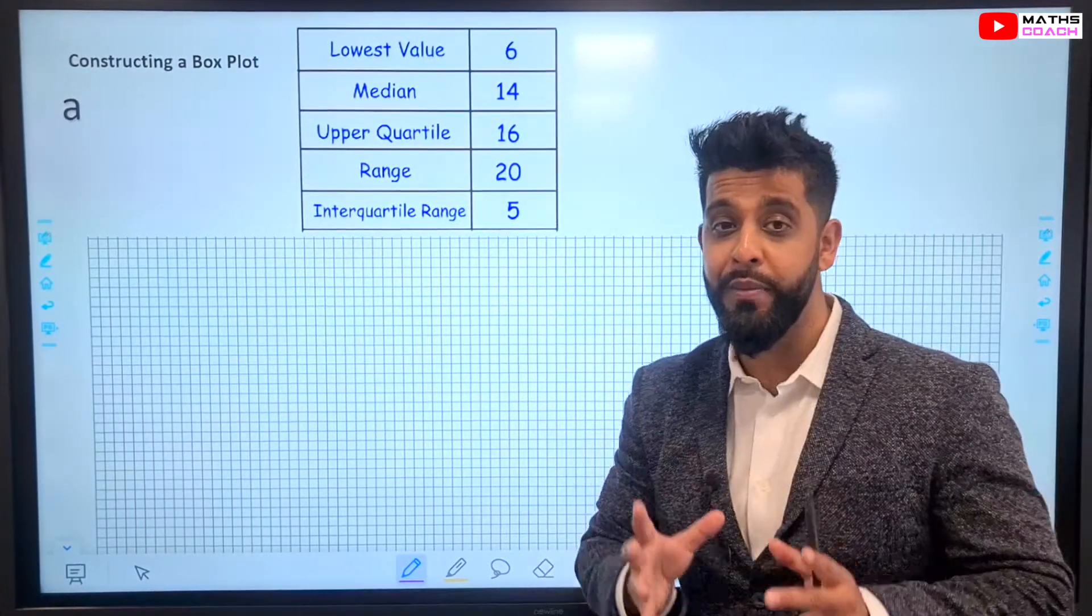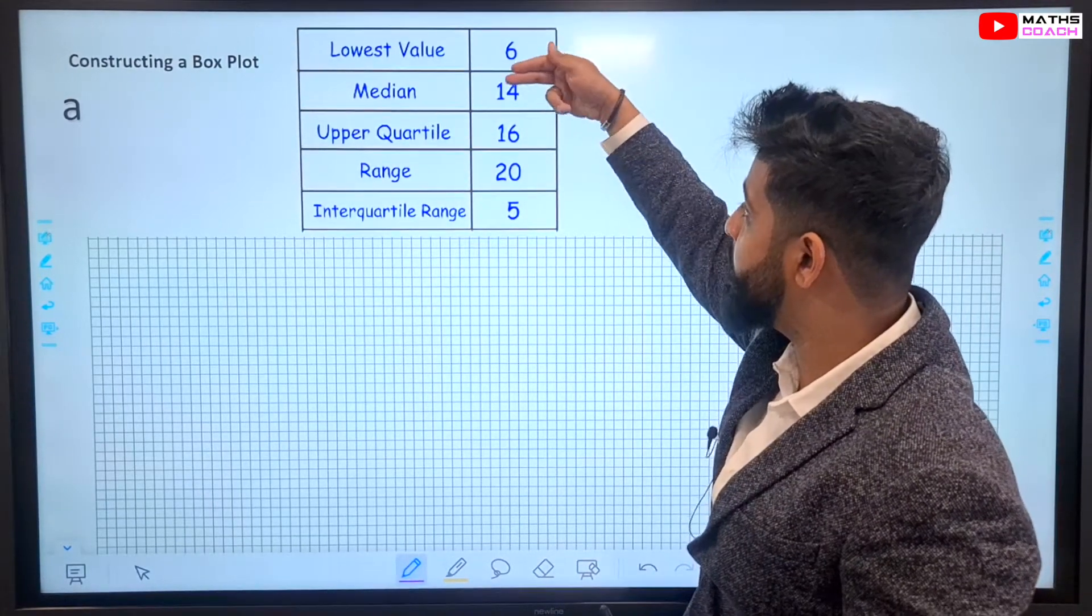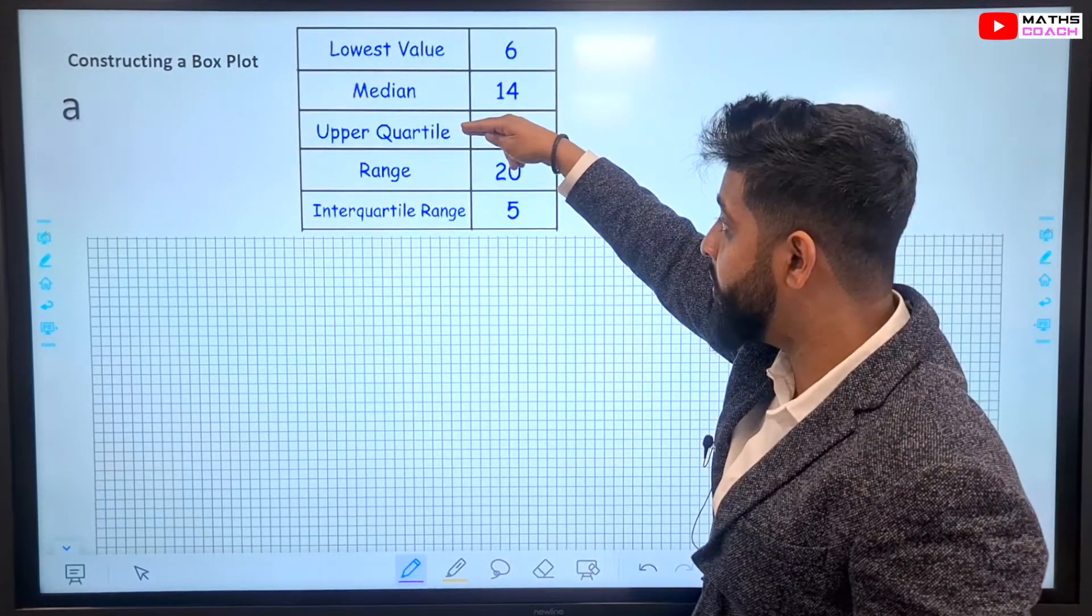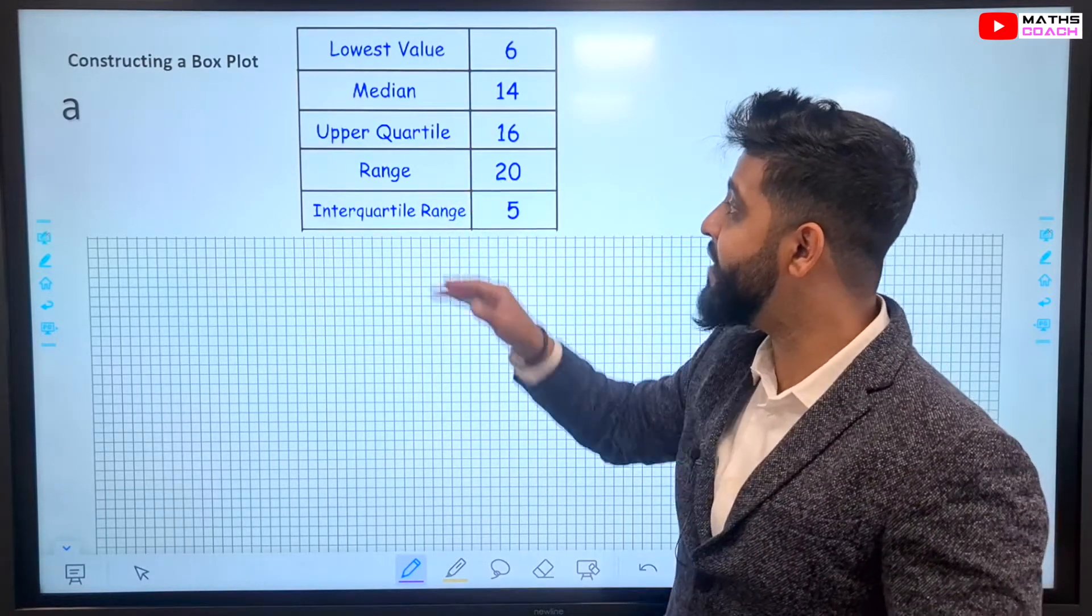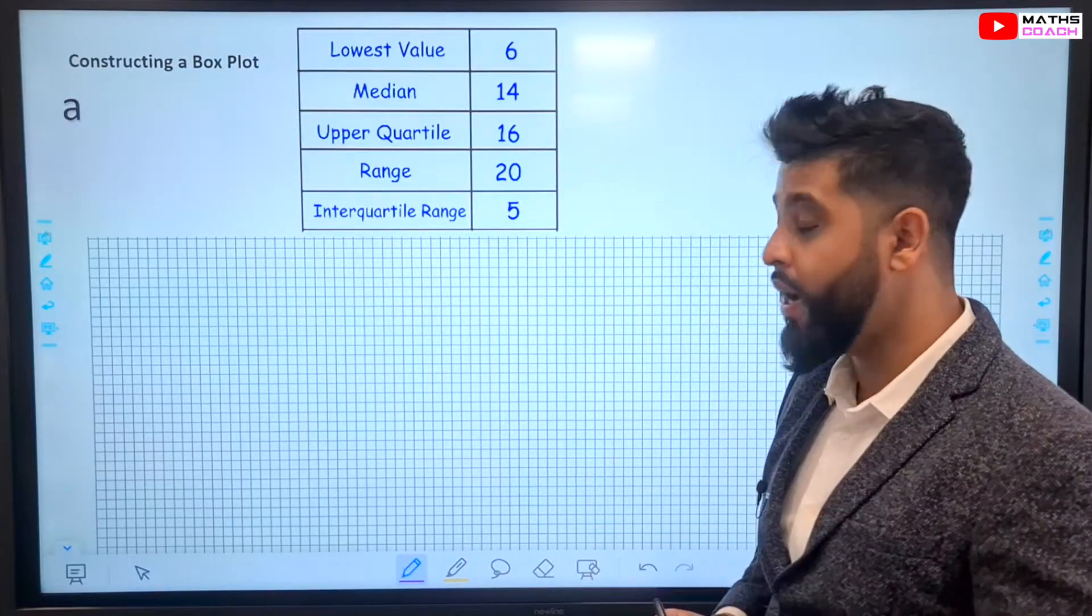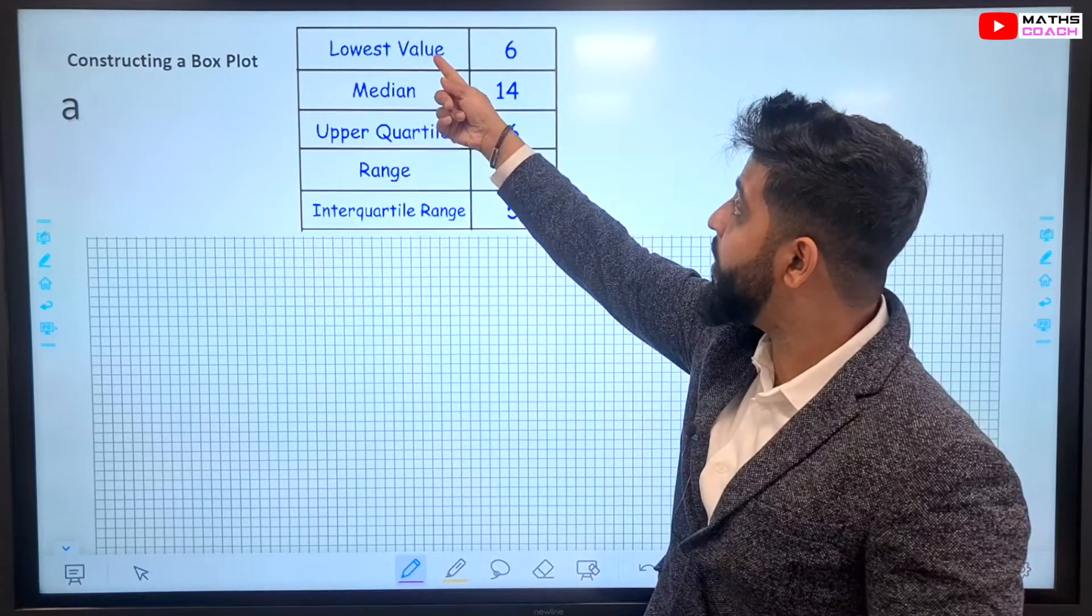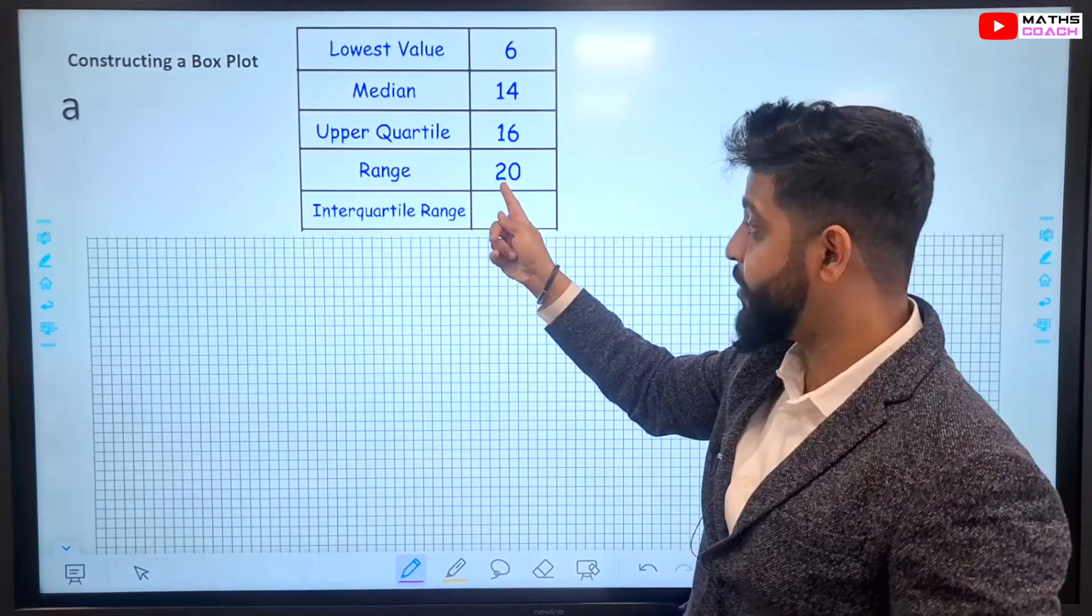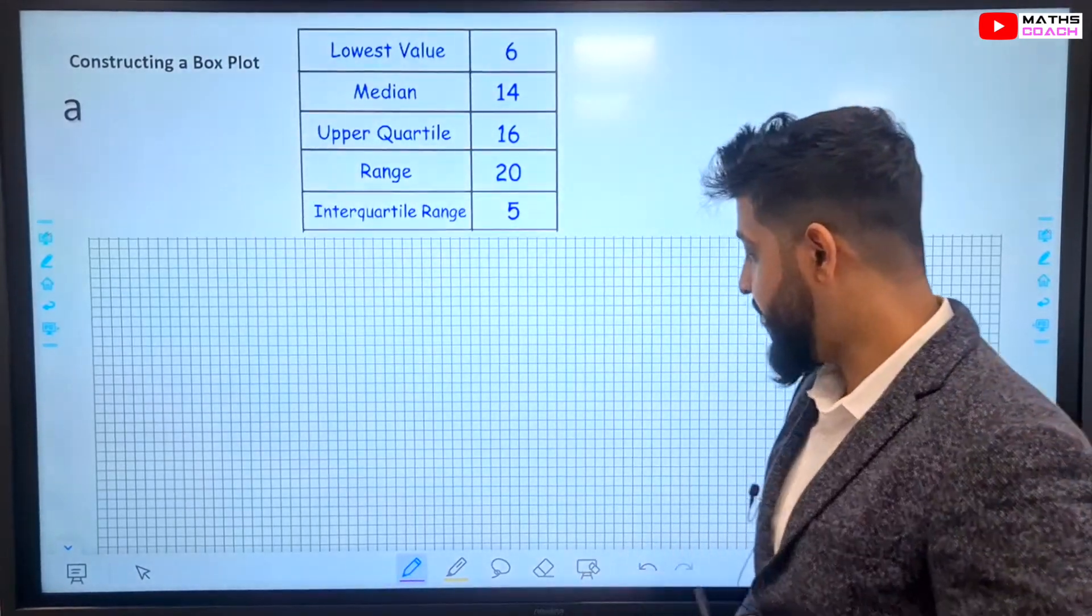Now, have a look at this question. This question is very typical of GCSE questions and how they're given to you. You've got the lowest value, the median, the upper quartile, the range, and the interquartile range. You haven't been given one of the values that you need, which is the lower quartile. And you have to work this out. You also haven't been given the highest value. Only the lowest value and this range that you'll be using to work out what the highest value is.